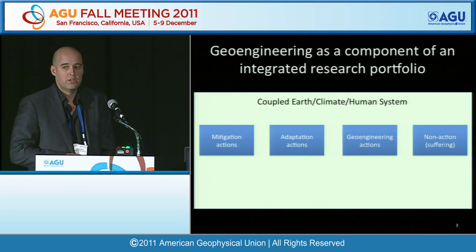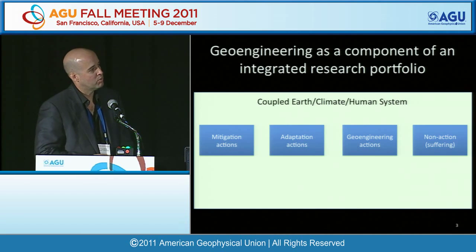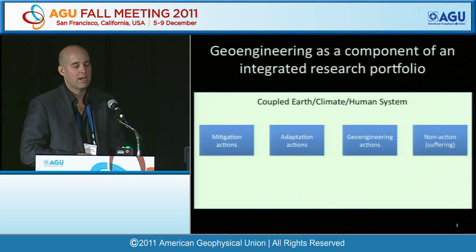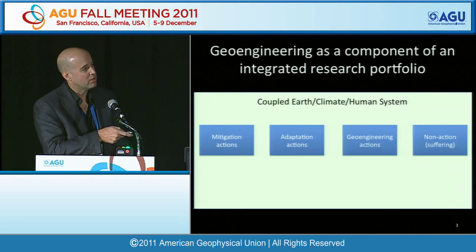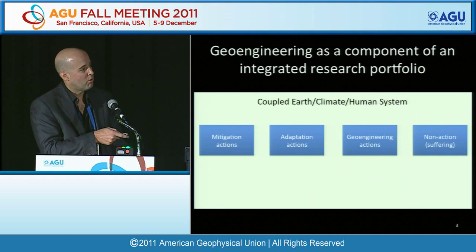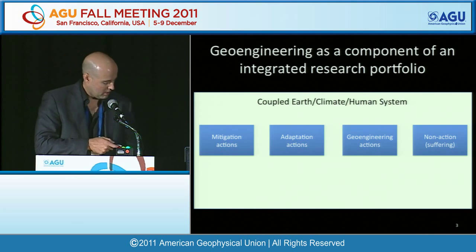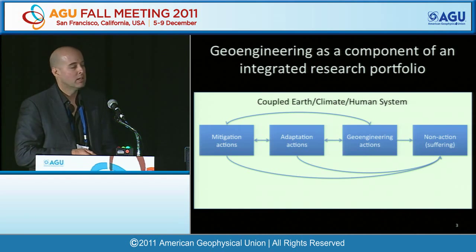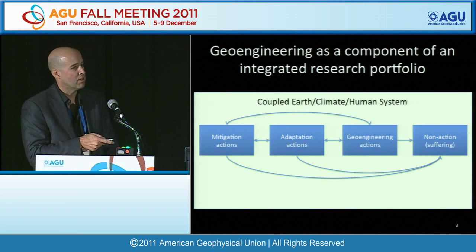Since this session is on geoengineering research policy, I wanted to start by stepping back. We shouldn't think of geoengineering in a vacuum. The coupled Earth-climate-human system to which we're seeking to respond takes four forms: mitigation, adaptation, geoengineering, and non-action — i.e., suffering. Things we do in one domain have lever arms on others, or can create unintended consequences.